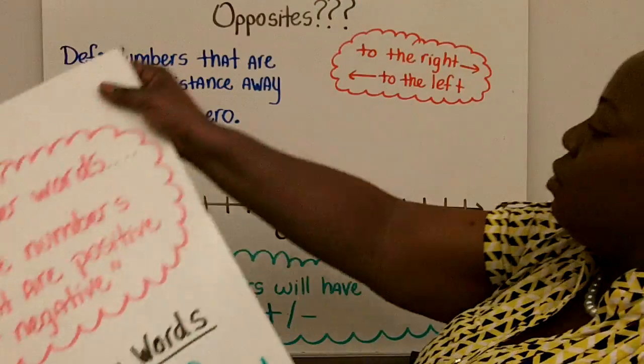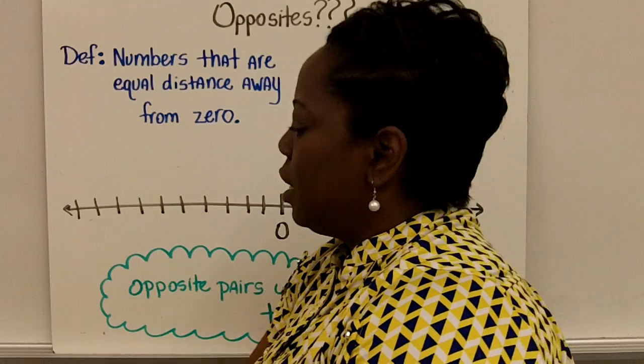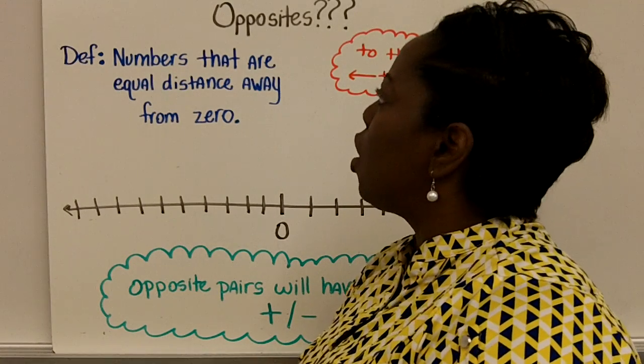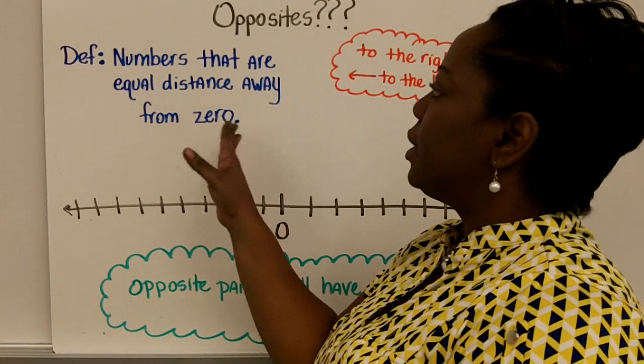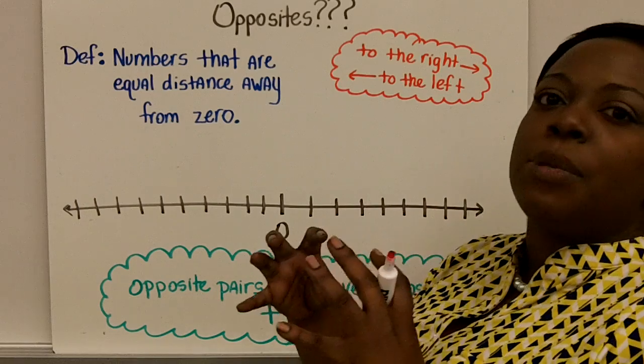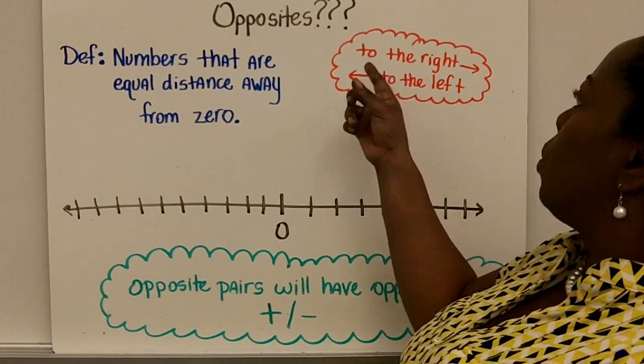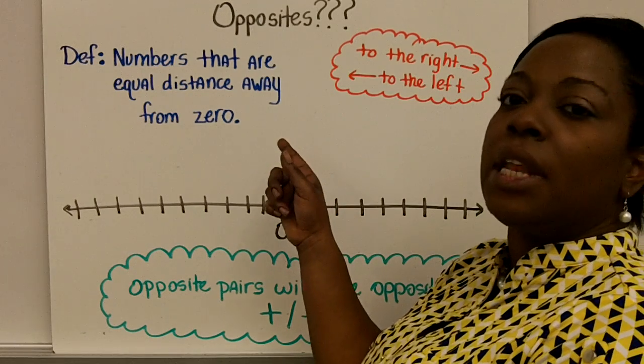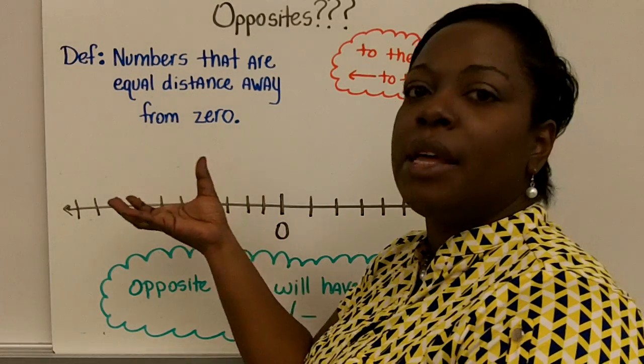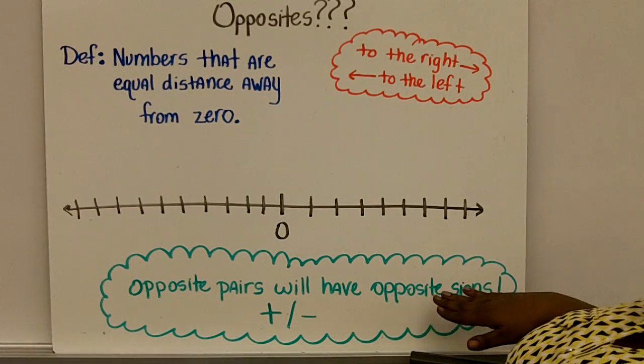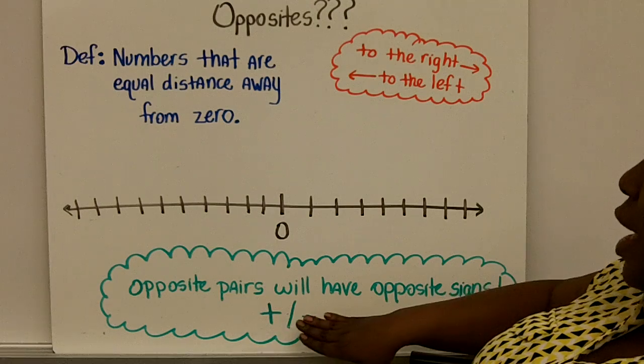Next thing I want to talk to you about: opposites. The proper definition of opposites. Opposites are numbers that are equal in distance away from zero. So in other words, if you have an opposite pair, one is going to be to the right of the zero while the other will be to the left of the zero, making them opposites. It's important to know that opposite pairs will have opposite signs, positive and negative.